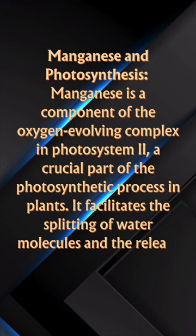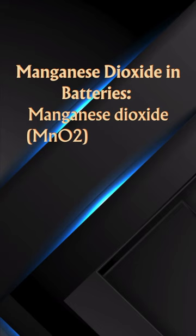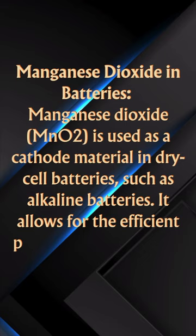Manganese dioxide in batteries. Manganese dioxide, MnO2, is used as a cathode material in dry cell batteries, such as alkaline batteries. It allows for the efficient production of electrical energy.